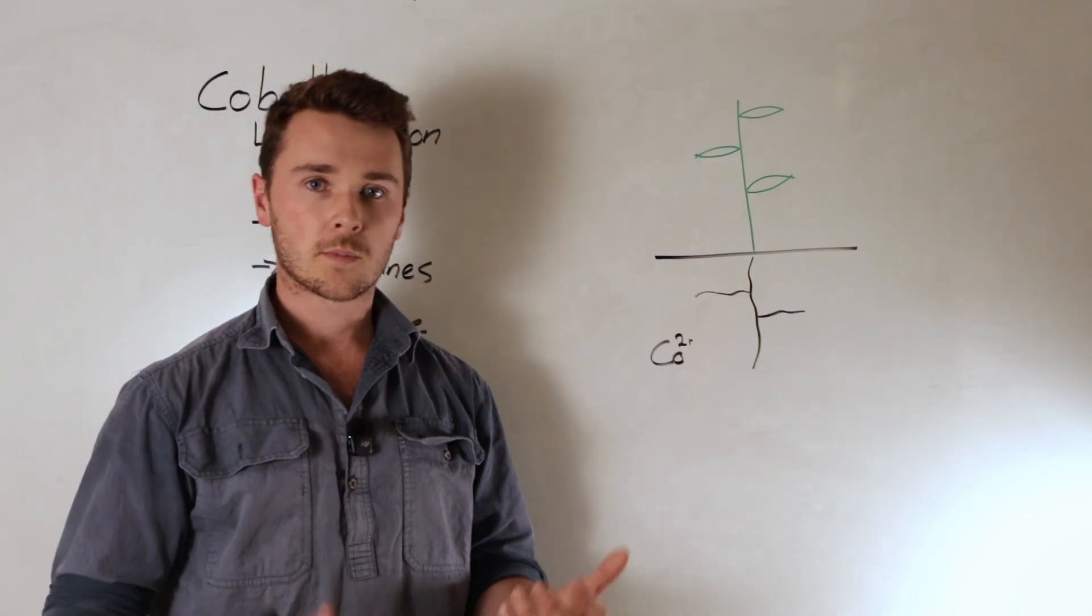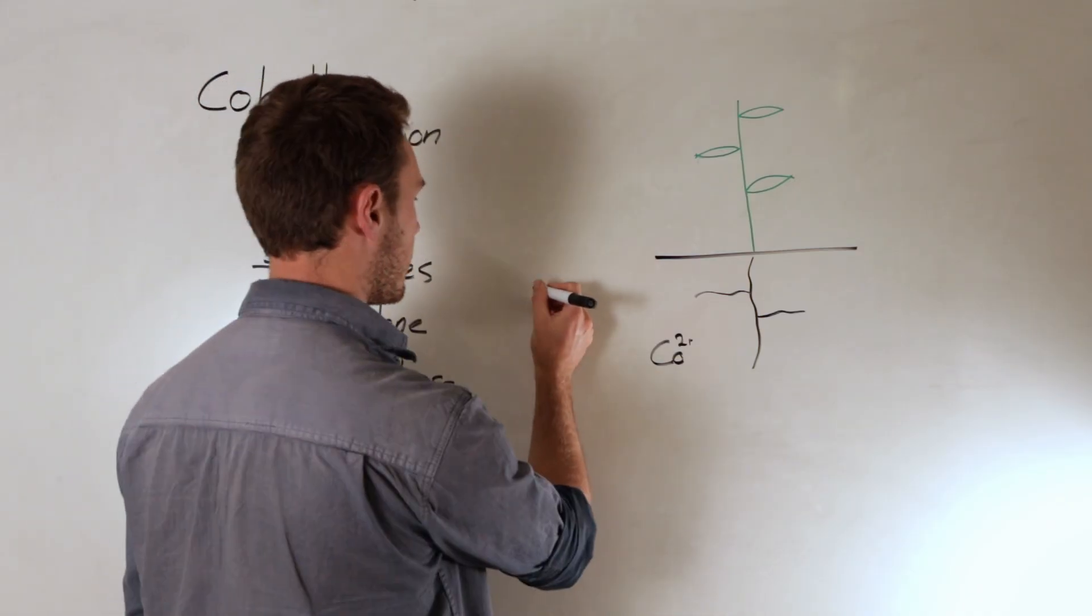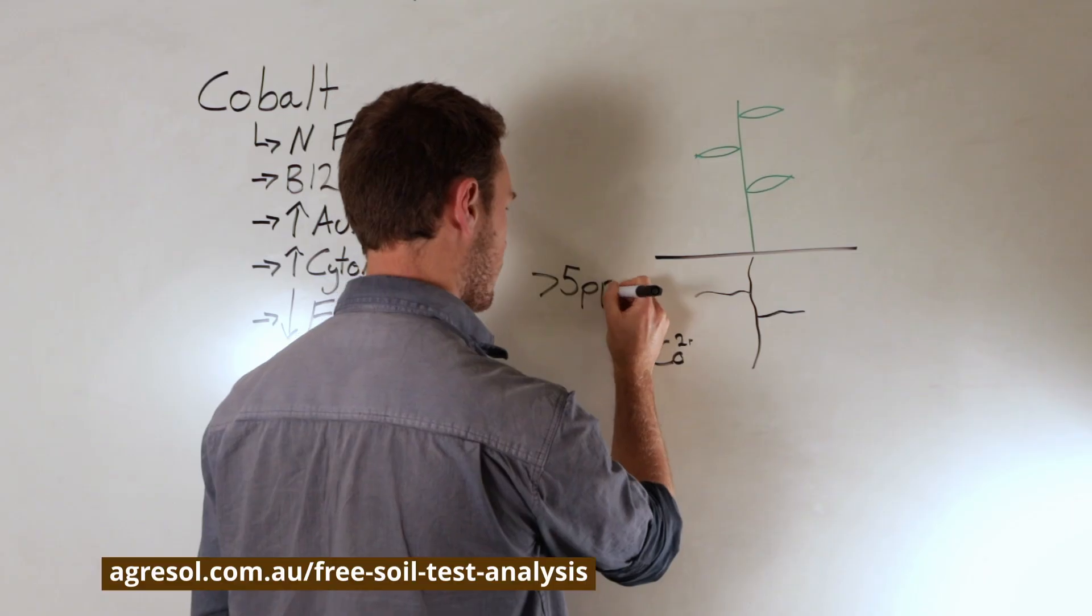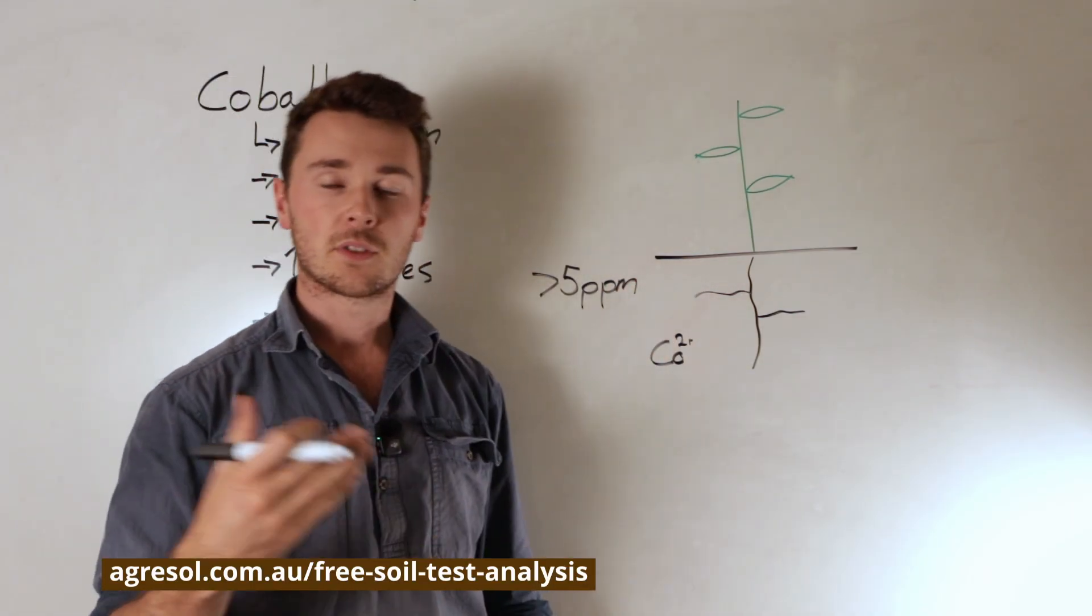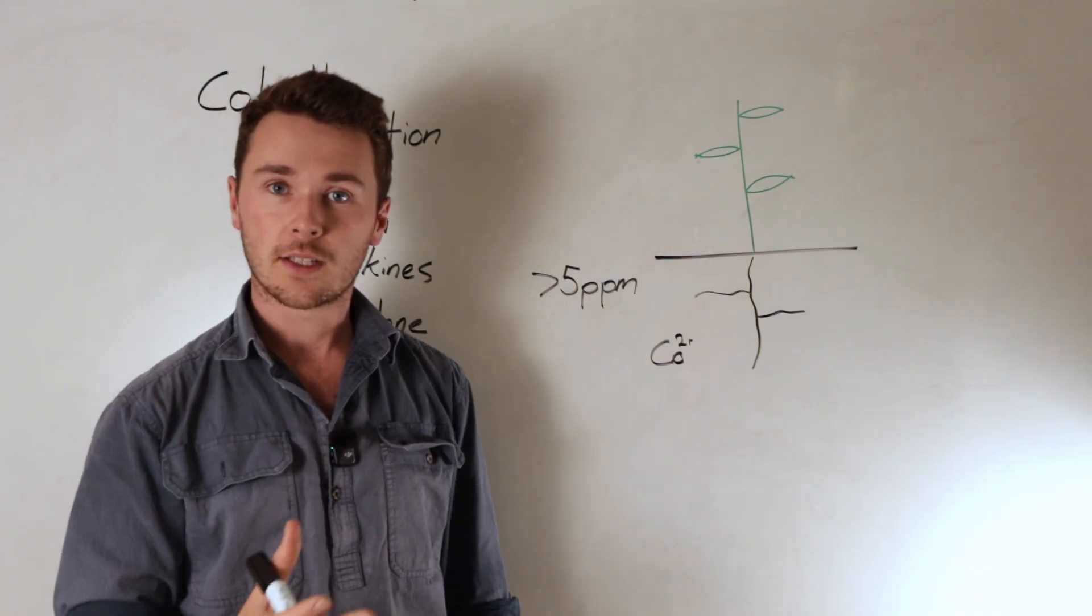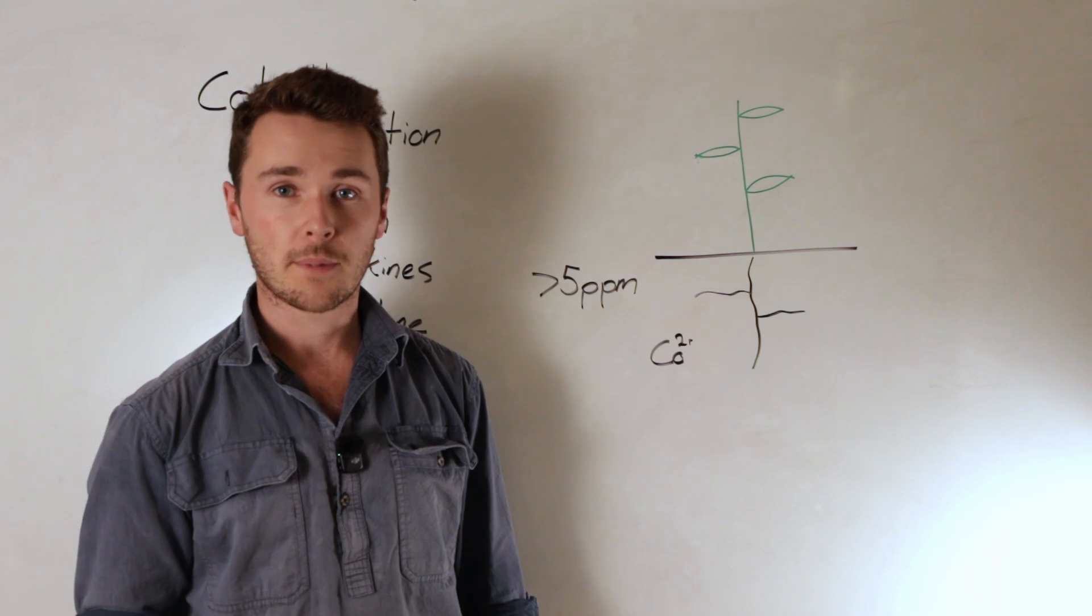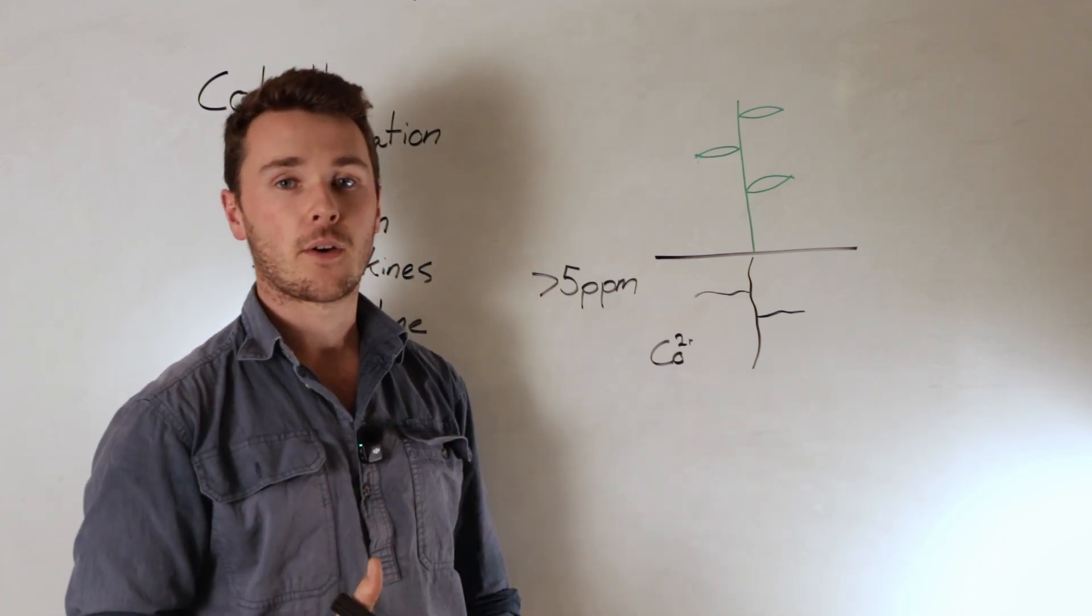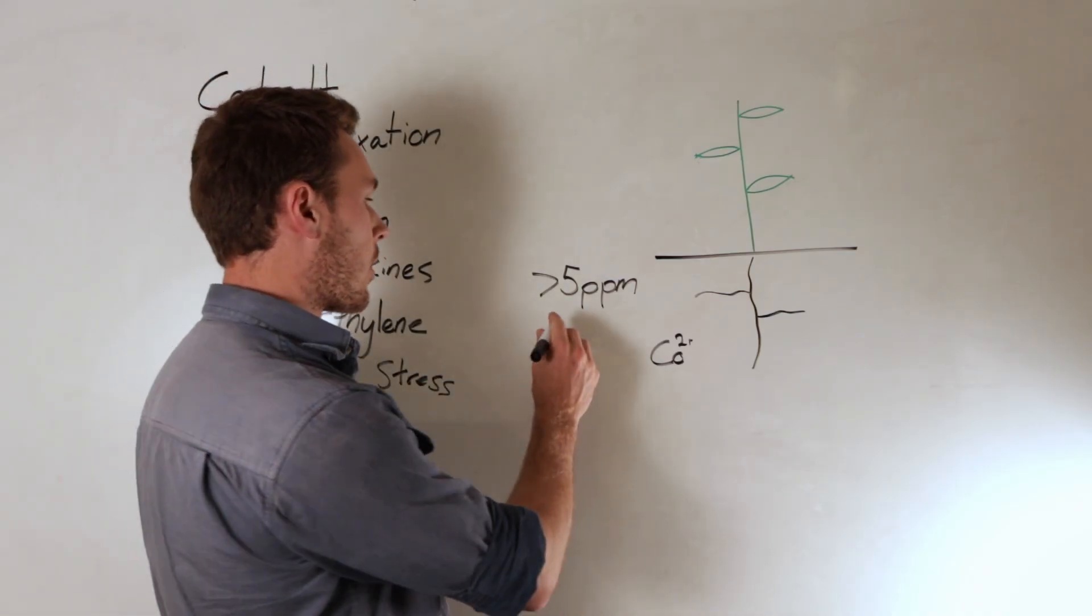So when we're thinking about cobalt in our soil, typically what we want to be aiming for is greater than five parts per million in our total on our soil test. We get the total done for cobalt, and if it's below that five parts per million that's really when you're going to start seeing deficiencies. A lot of literature references I think 15 to 25 parts per million in the soil as the usual range, but if you can get it above five parts per million that's pretty good and typically that's what we're aiming for. So if it's below this five parts per million,